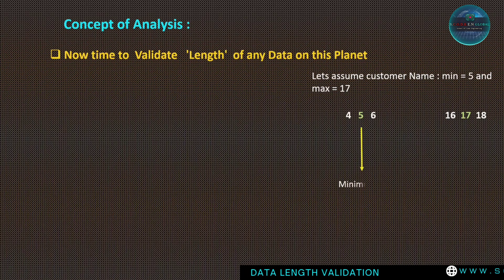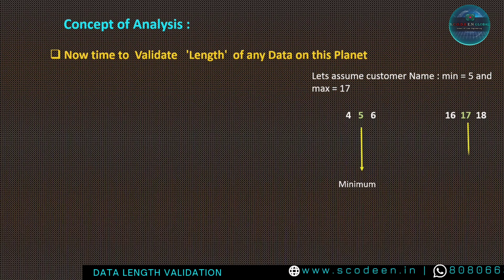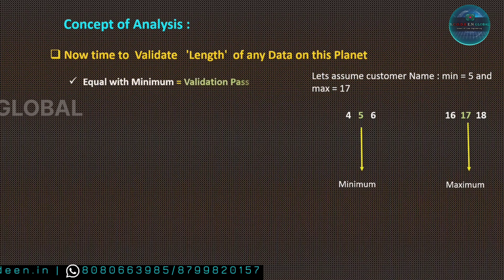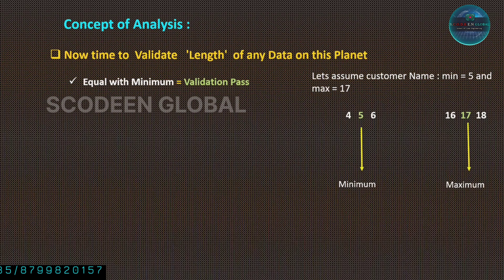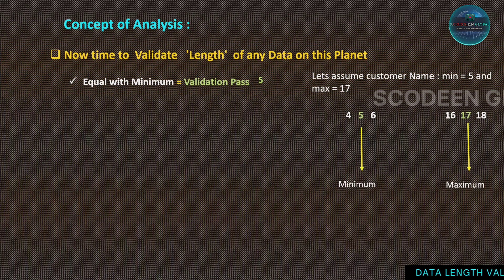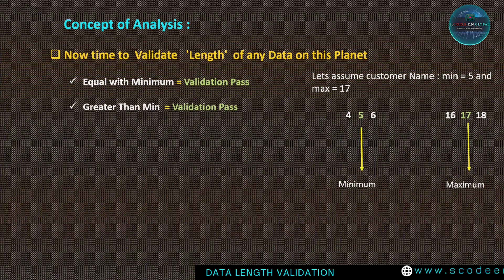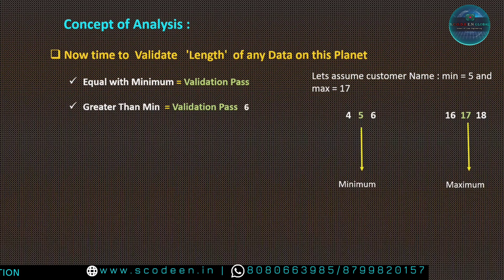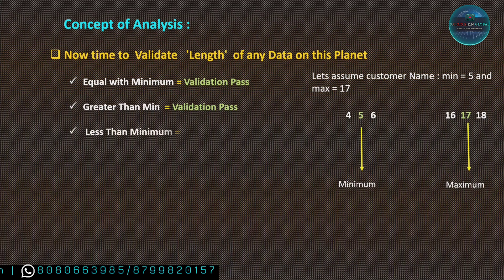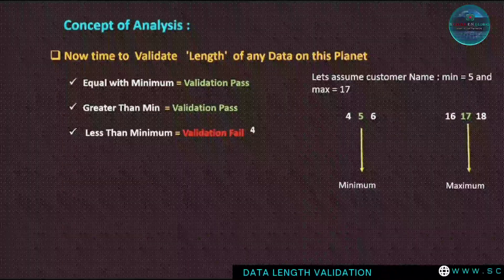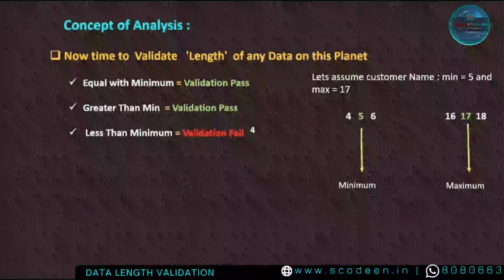5 represents the minimum value and 17 represents the maximum value. We have to analyze each parameter: equal with minimum — that is 5 — validation must pass. Greater than minimum — that could be 6, 7, or 8 — validation must pass. Less than minimum — this is a negative scenario — the end user will enter 4 and the validation must fail.